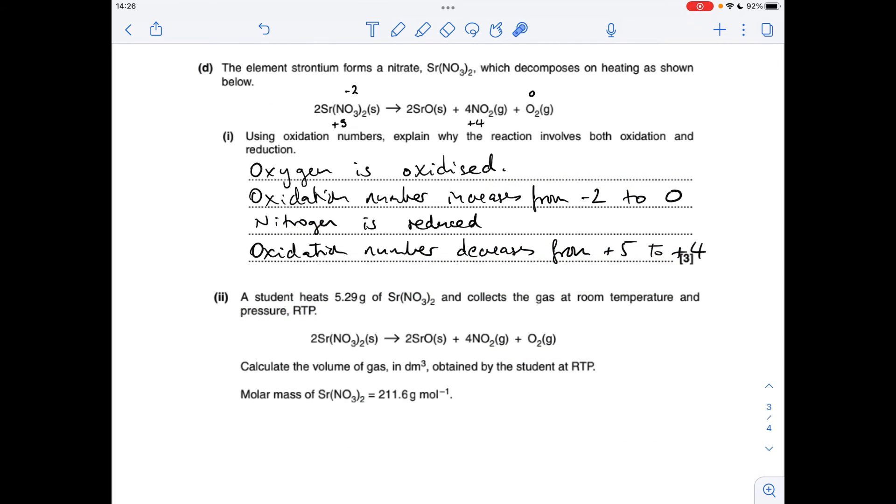Part D now, I've got to use oxidation numbers to explain why this reaction involves both oxidation and reduction. So you can see I've written up the oxidation numbers. The atoms whose oxidation number changes: you can see nitrogen has gone from +5 to +4, oxygen's gone from -2, still -2 there, but it's gone to 0 there.